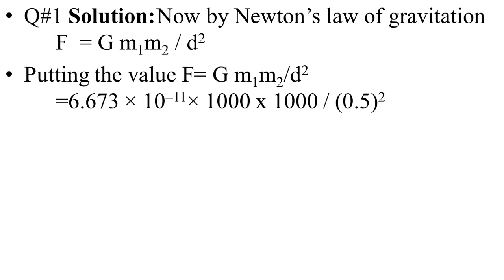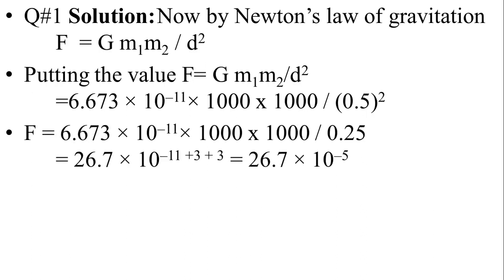Putting the values: 6.673 multiplied by 10 raised to power minus 11, multiplied by 1,000 multiplied by 1,000, divided by 0.5 squared which is 0.25. So 6.673 divided by 0.25 is equal to 26.7. Adding the powers: minus 11 plus 3 plus 3, equals 26.7 multiplied by 10 raised to power minus 5.